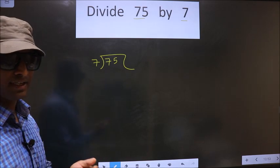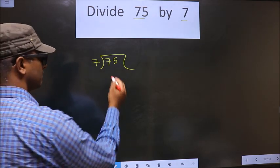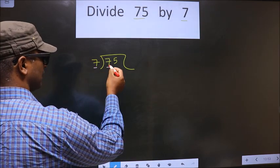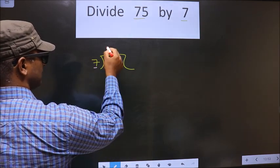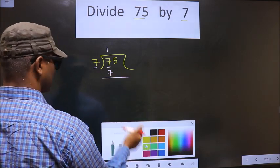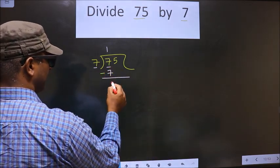Okay. Next. Now here we have 7 and here 7. When do we get 7 in 7 table? 7 once 7. So now we subtract, we get 0.